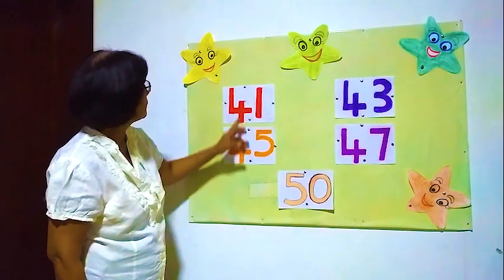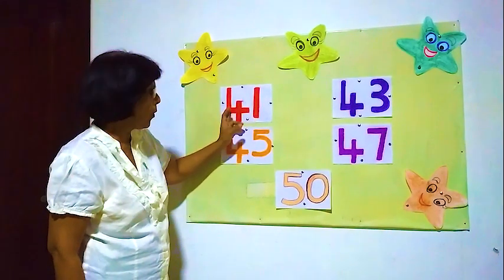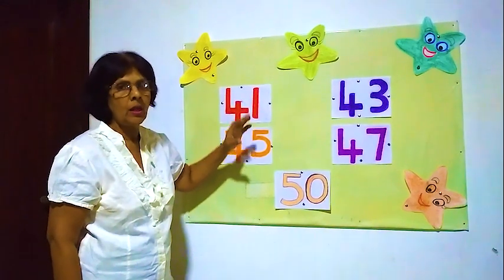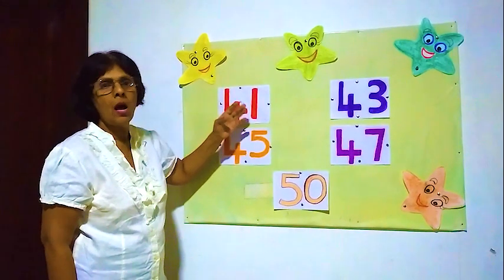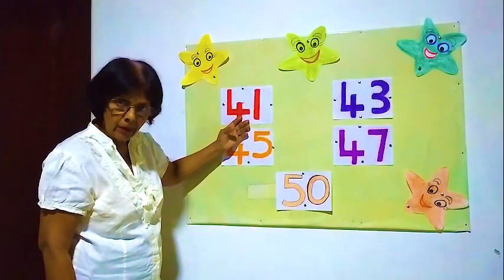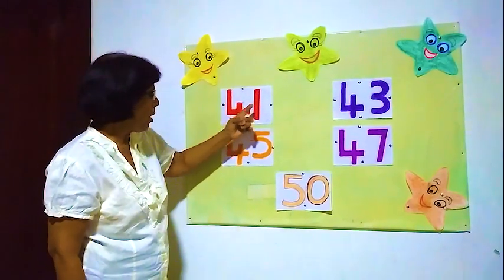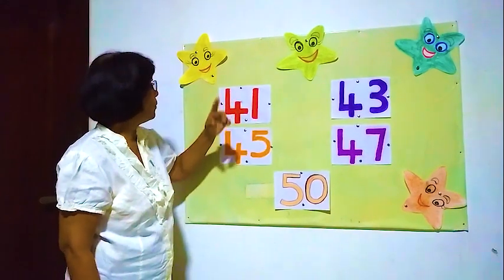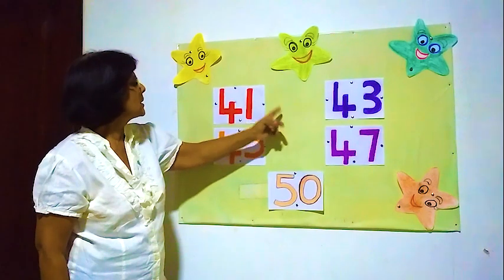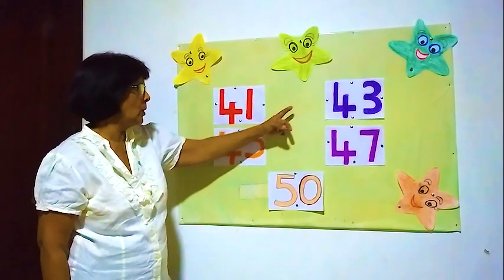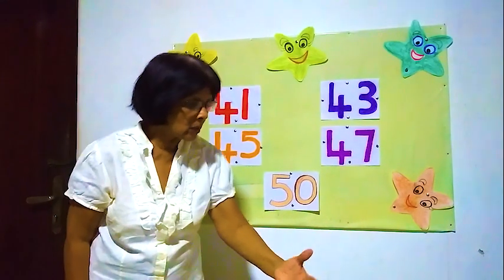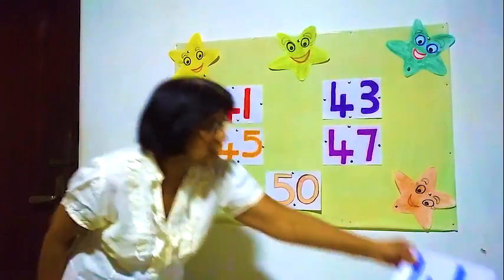Now, after 41, what is the next number? What is the next number after 41? The next number is 42. Here, 41 — next number is 42.